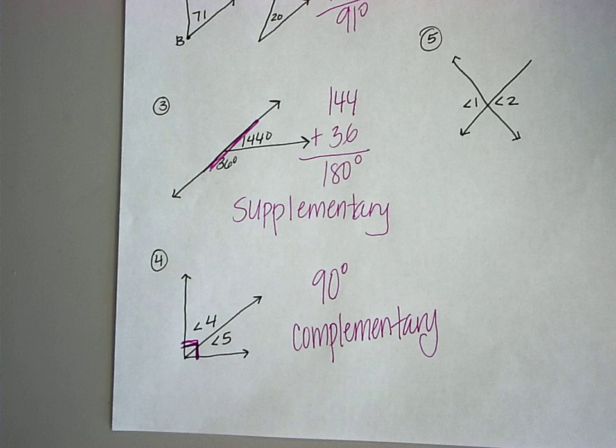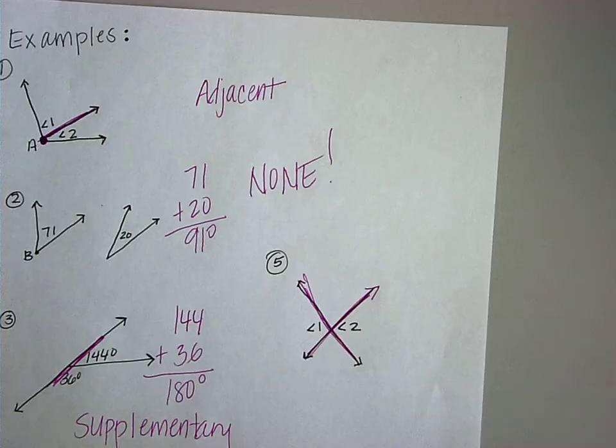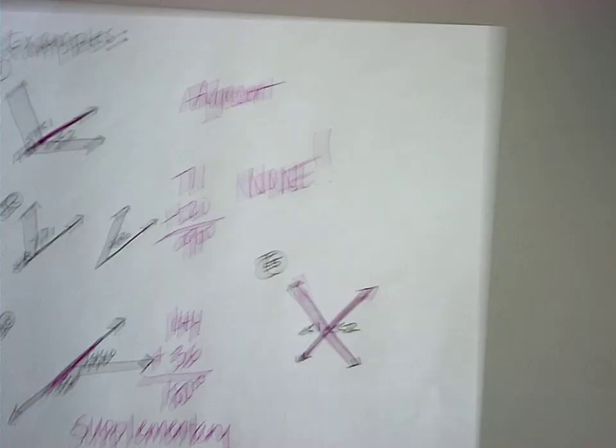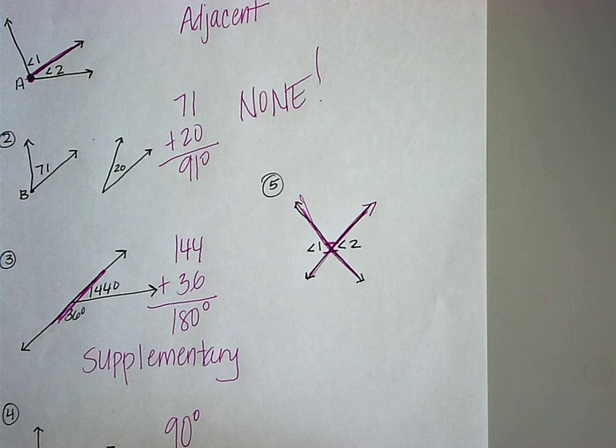And finally, number five. There are two intersecting lines. Is angle one and angle two across from each other? Yes — one and two are across from each other. We can draw equal signs across from them. So they are considered vertical.